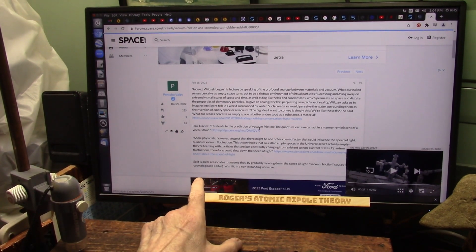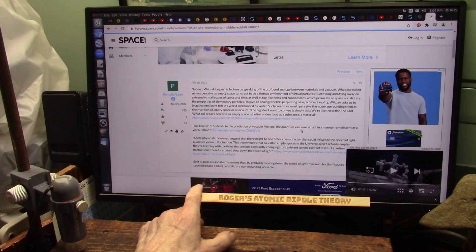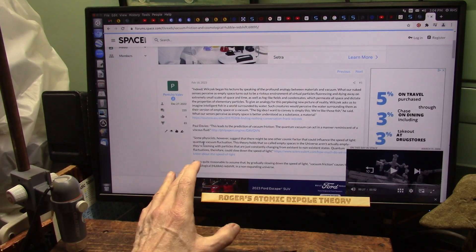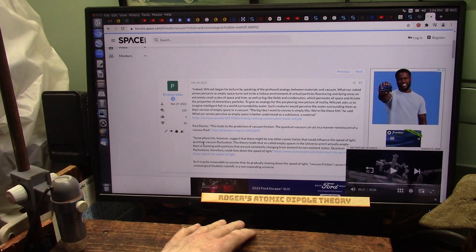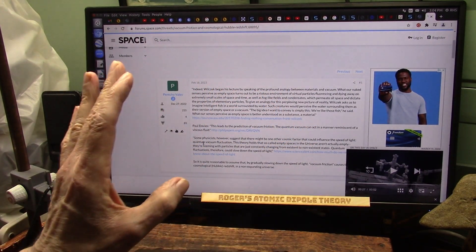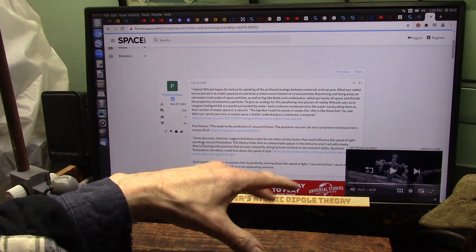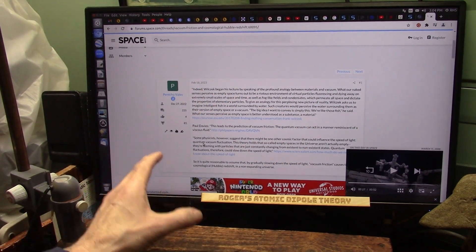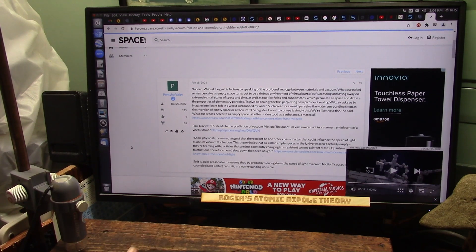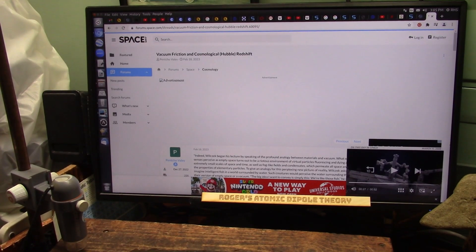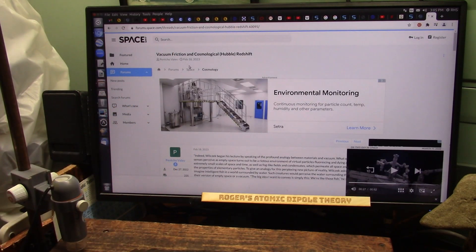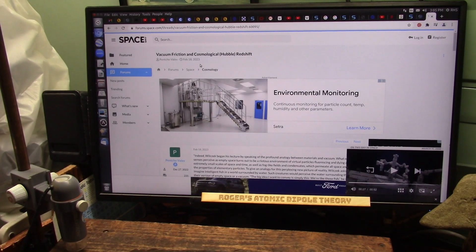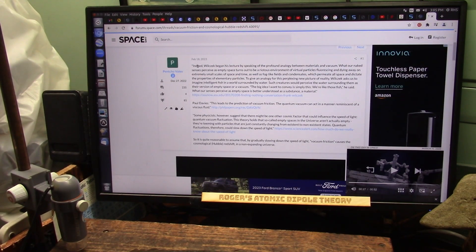And he says, it leads to the predicament of vacuum friction. Quantum vacuum can act as a manner reminiscent of a viscous fluid, similar to watery stuff. Coming through it, you have to come through it and plow through it. And I can show light plowing through gases, which is nothing more than the things that are in space. Very, very similar. Okay, this is a vacuum friction cosmological Hubble redshift. And this is just a few days ago, February 18, 2023.